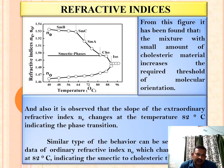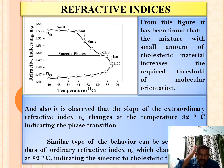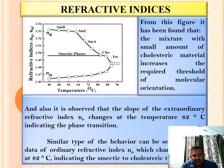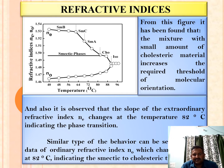Here we have plotted a graph of refractive indices versus temperature for both ordinary and extraordinary rays. For increasing temperature, you can see the different liquid crystalline phases: smectic B, smectic C, smectic A, cholesteric, and isotropic. In the case of the extraordinary ray, as temperature increases, the refractive index keeps on decreasing.